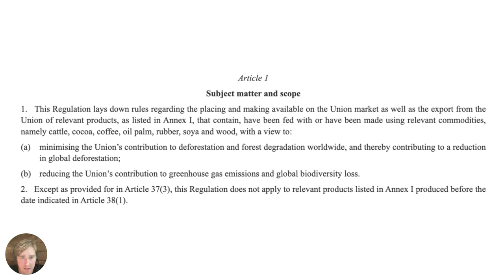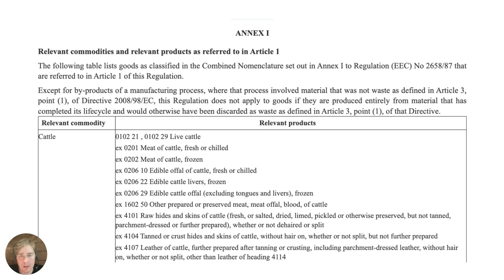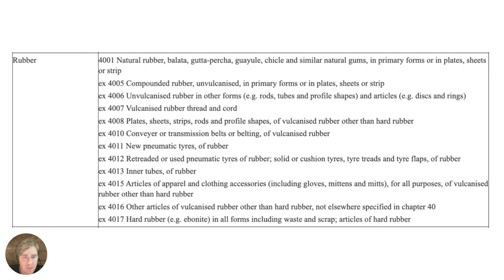Let me show you what that could mean in practice. When it comes to cattle, they mention meat and so on, but they also cover hides and skins, which could be relevant if you're manufacturing leather goods. That's something many businesses misunderstand — they're not involved directly in the production or importation of the raw material, but the EUDR is relevant nonetheless. You can find this under Annex 1.